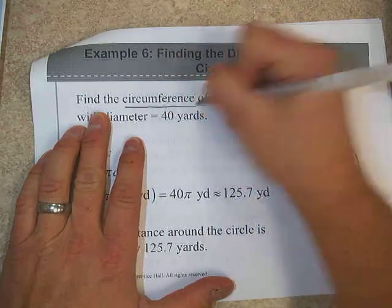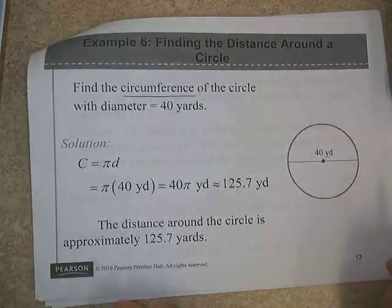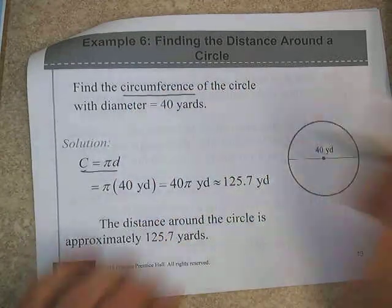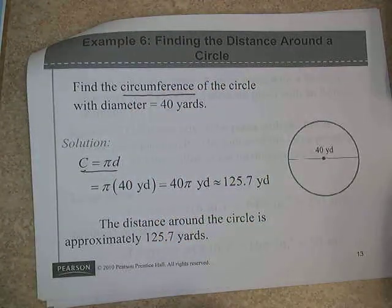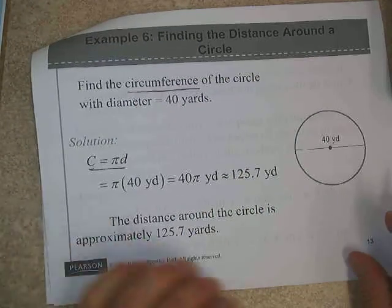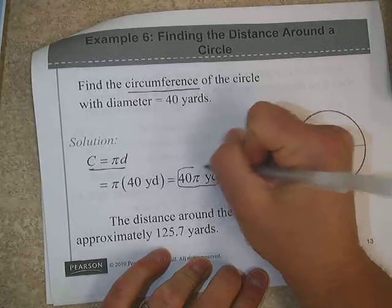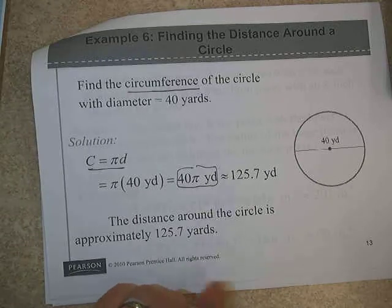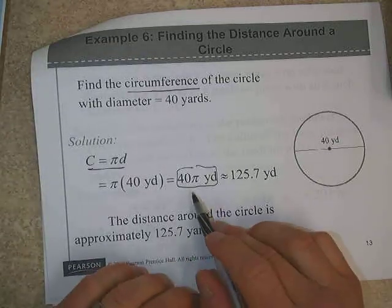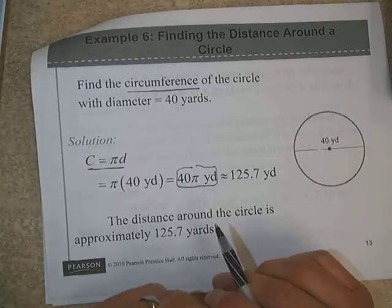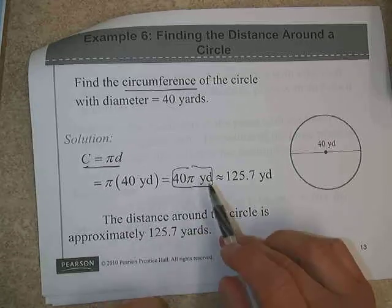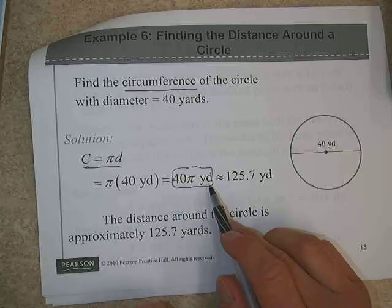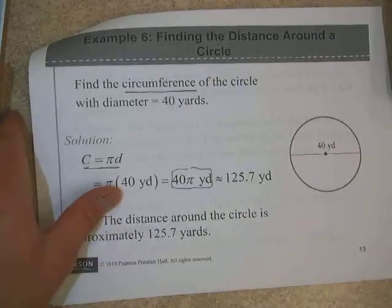Now, if we want the distance around the circle, we call that the circumference. The distance around the circle, if it has a diameter of 40 yards, we can use the formula C equals pi D. Now, if they do not tell you to round it, then leave your answer as 40 pi yards. If they tell you to round it, then round it to whatever decimal place is indicated. But in general, we leave circumferences in terms of pi. So leave it as 40 pi yards. And notice it's a distance here, so it's not yards squared. It's just yards.